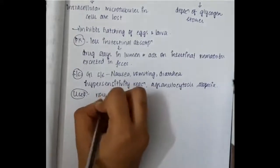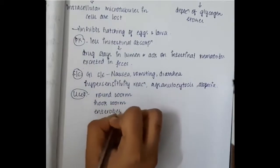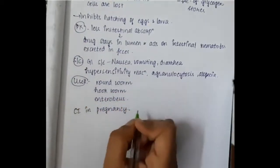The uses of mebendazole: it is used in treating roundworm, hookworm, and also Enterobius vermicularis. This mebendazole is contraindicated in pregnancy.